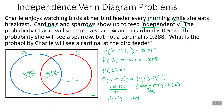So the whole cardinal circle is 0.64. The cardinal-only section is 0.64 minus 0.512, which is 0.128. And the probability of seeing neither, if we add up all three regions and subtract from one, is 0.072. So we can get all the numbers in the diagram and find any probabilities we want from that.